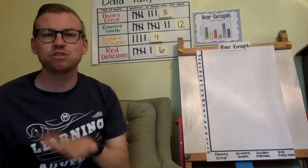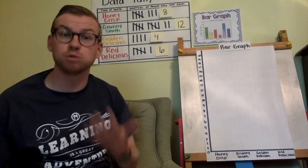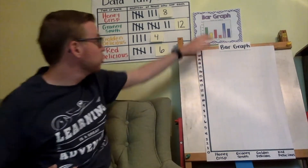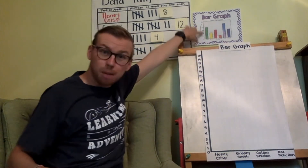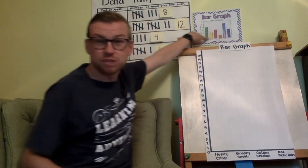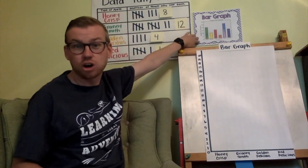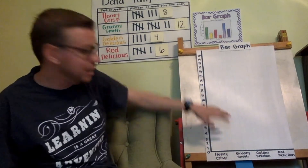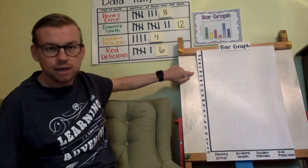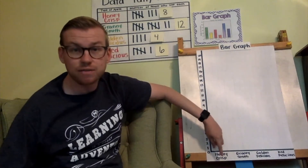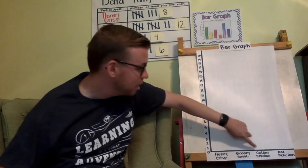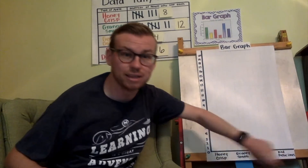What we have to do next is start making some graphs. A bar graph looks like this — it has numbers that go up the side, and normally whatever the options in the survey are go across the bottom. I have numbers going up the side zero to twenty, and at the bottom I have the four different apple choices: Honeycrisp, Granny Smith, Golden Delicious, and Red Delicious.